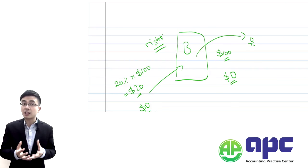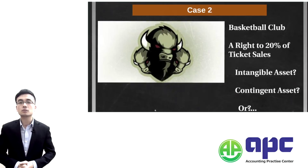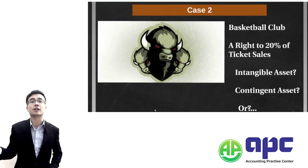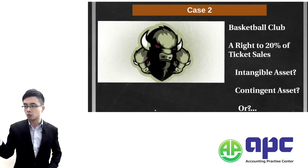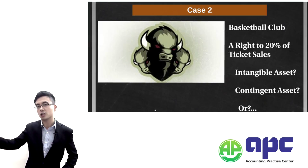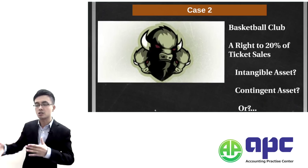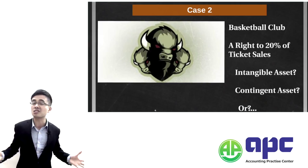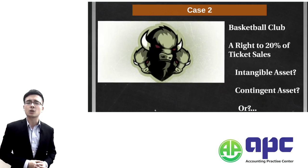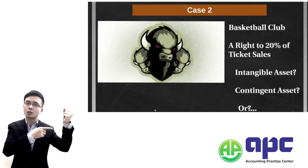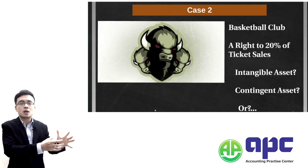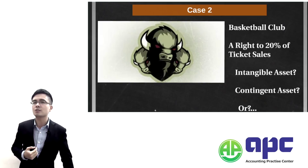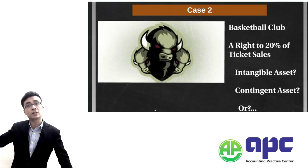You signed a contract with that basketball club to enjoy that 20% of ticket sales right. Because you bought that right, the right is just a right — we can't touch it; it stays in a contract only. So you may have questions: either we present this right as an intangible asset because we can't touch it, or we put it into property plant and equipment. If we put the 20% right into PPE, that's not correct because PPE relates to land, buildings, and machinery.